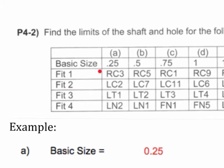The first example for A is RC3, which is running clearance 3. So you're going to use the proper table that's in the appendix for running clearances. I'll show you that in a second.